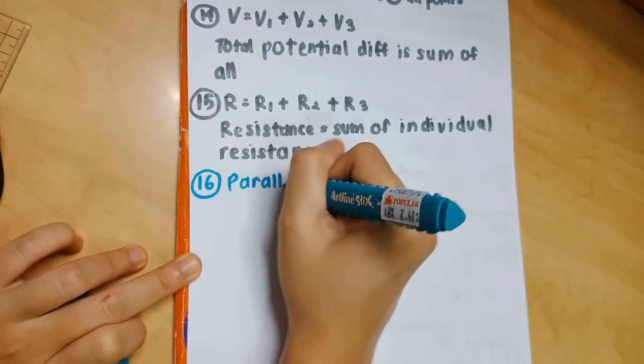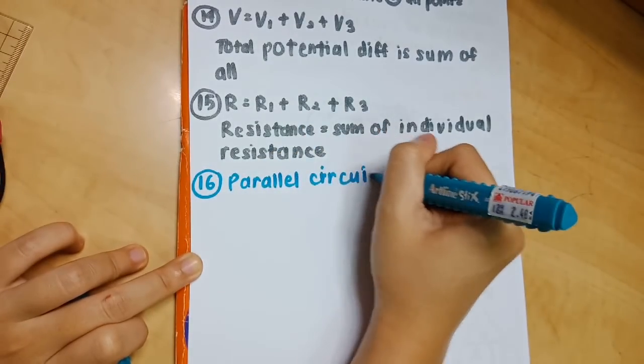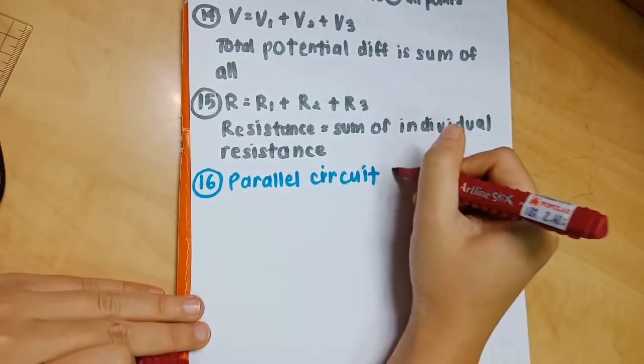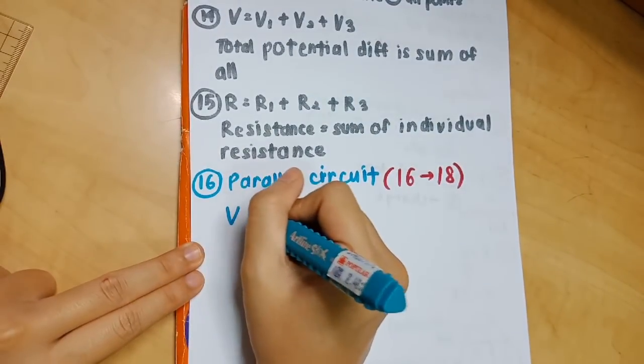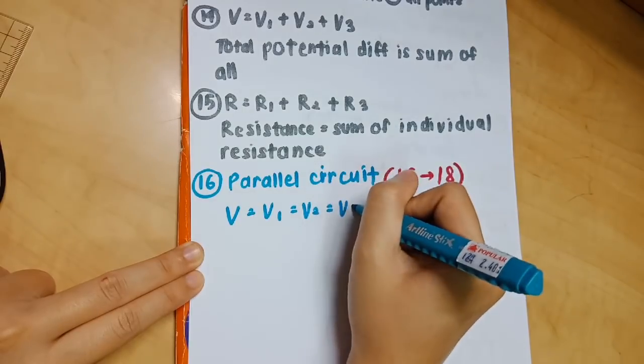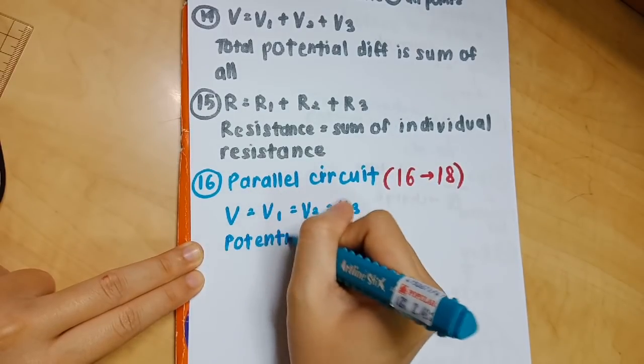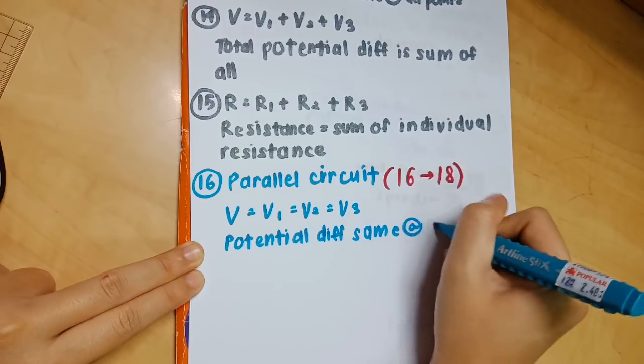Number 16 is for parallel circuit. Actually from number 16 to 18 will be on parallel circuit. Number 16: V equals V1 equals V2 equals V3. The potential difference is the same at all points in the circuit.